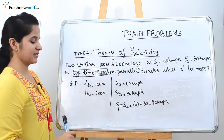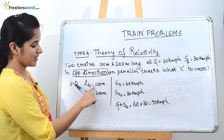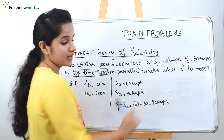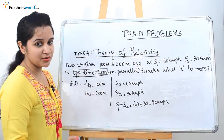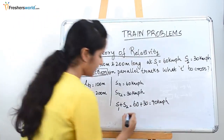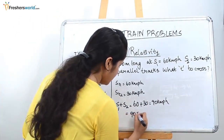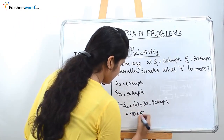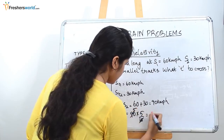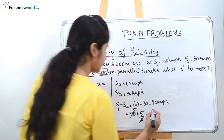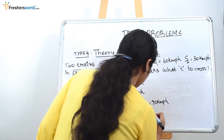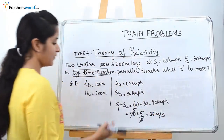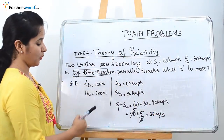The catch here is that the length is in meters and the speed is in kilometers per hour. As usual, we need to convert it. So 90 into 5 by 18 gives us 25 meters per second. Now we know the speed.